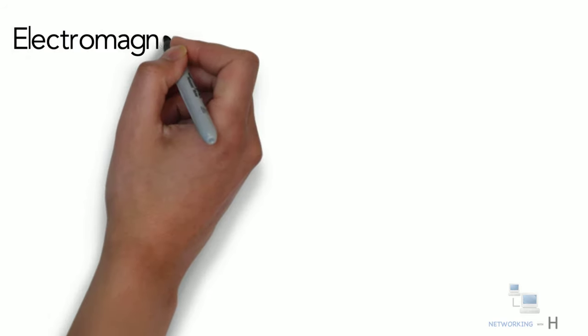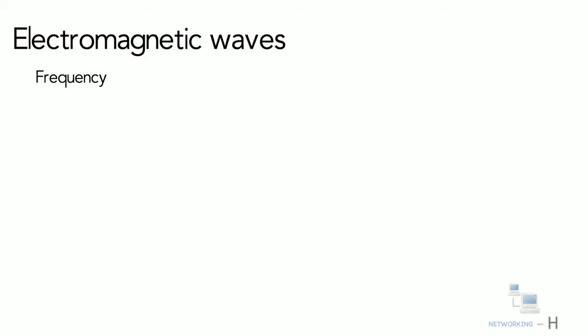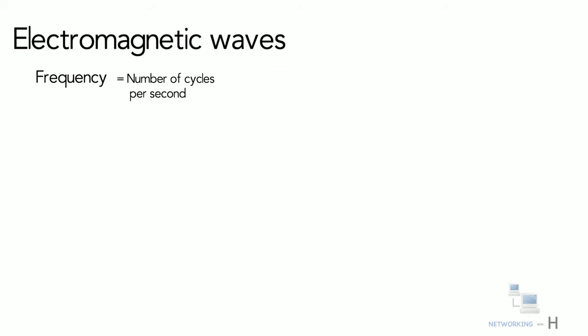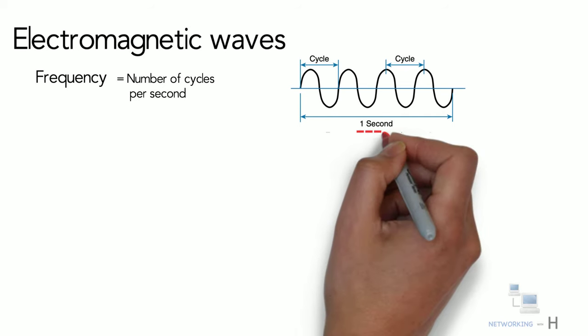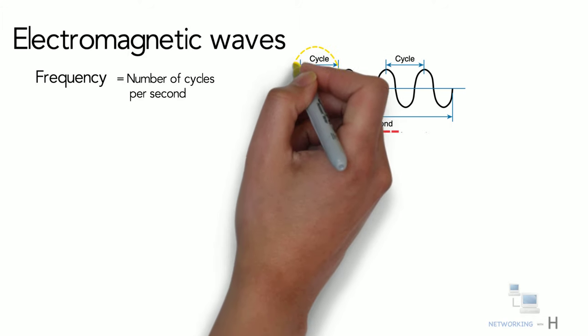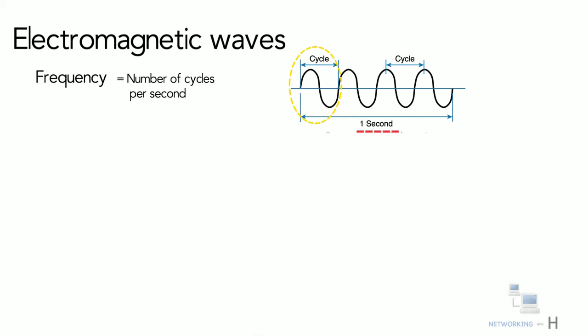Electromagnetic waves are measured using frequency. Frequency equals the number of cycles per second, that is, the number of times the signal makes one complete up and down cycle in one second. A cycle can begin as the signal rises from the center line, falls through the center line, and rises again to meet the center line.